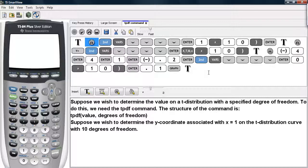So, for example, suppose we wish to determine the y-coordinate associated with x equals 1 on the t-distribution curve with 10 degrees of freedom. Well, here's how you can do it.